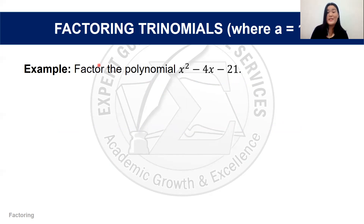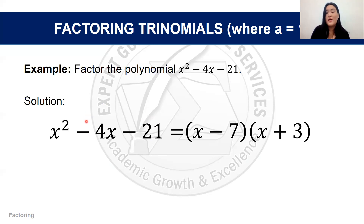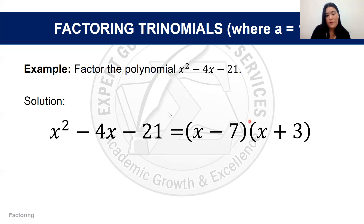Let's factor x² - 4x - 21. We need factors of -21 that give a sum of -4. The factors of 21 are 7 and 3. The larger factor, 7, follows the sign of the middle term, which is negative, so we have -7 and +3. Therefore, the factors are (x - 7)(x + 3).